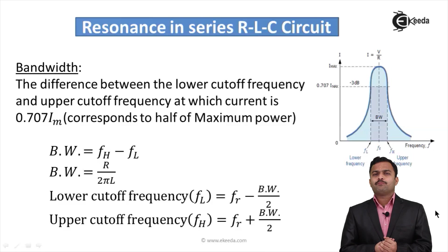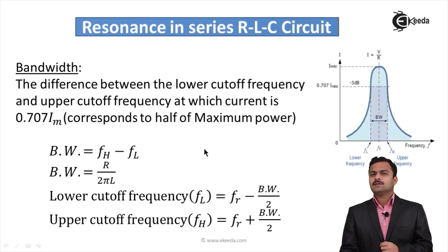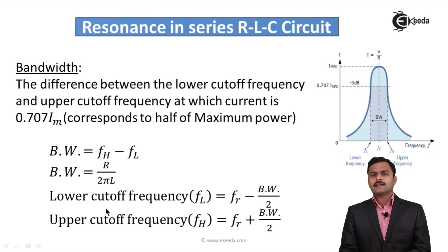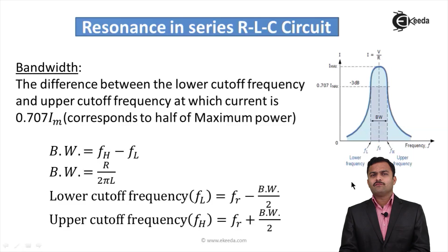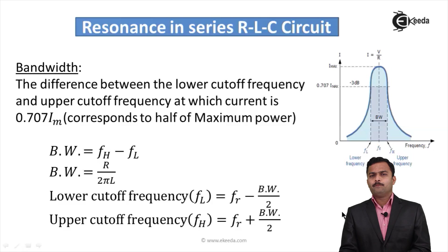The bandwidth formula is BW = FH − FL. In terms of circuit parameters, bandwidth is given by R/(2πL), so if you know the values of resistance and inductance you can find the bandwidth. The lower cutoff frequency FL = fr − BW/2, and the upper cutoff frequency FH = fr + BW/2.